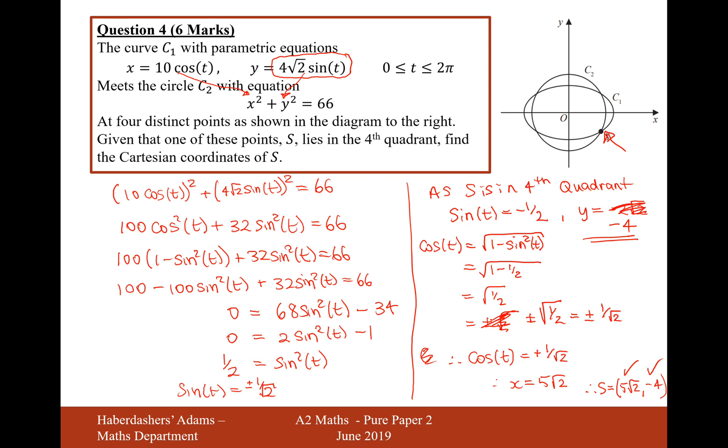So there we are, that's the answer for question 4 there. Six marks for that work there, some simultaneous equation work, solving trig equations, and then working with parametric equations as well. So the intersection of a good three or four topics there. So very good. Well done if you got that one. Let's move on to question 5.